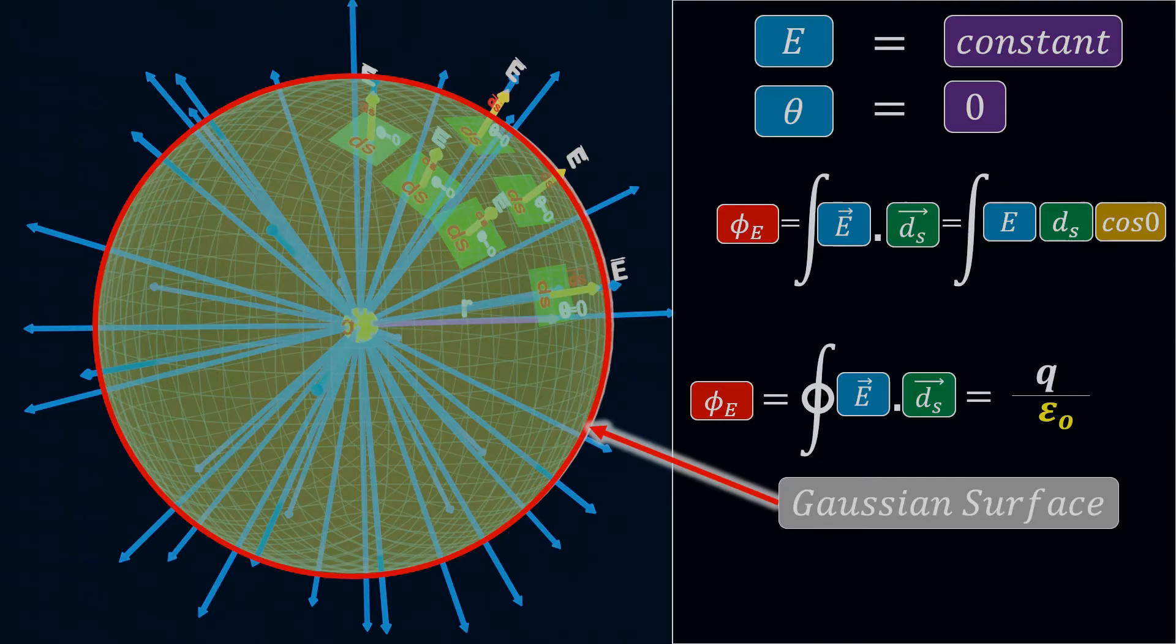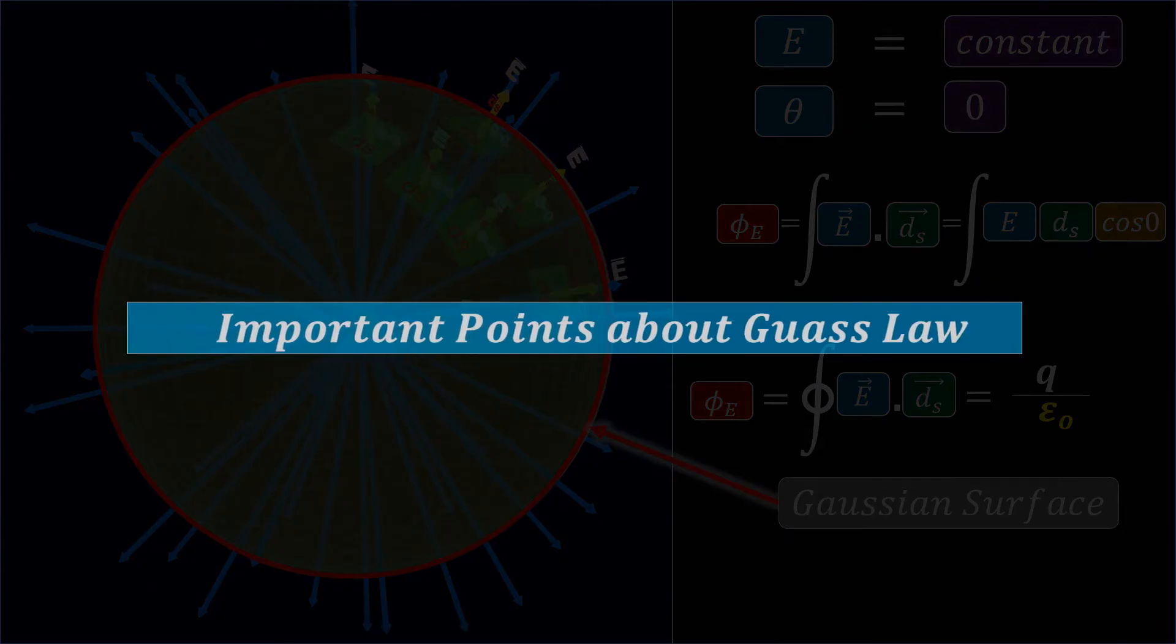A Gaussian surface can be used to calculate the electric field, or electric flux for a point charge, or even for a continuous charge distribution. Let's discuss some important points about Gauss law.